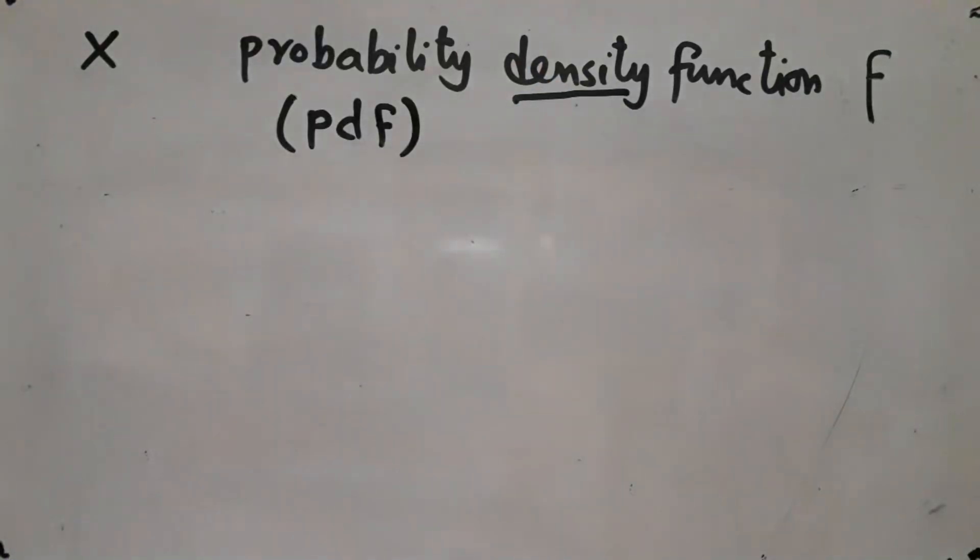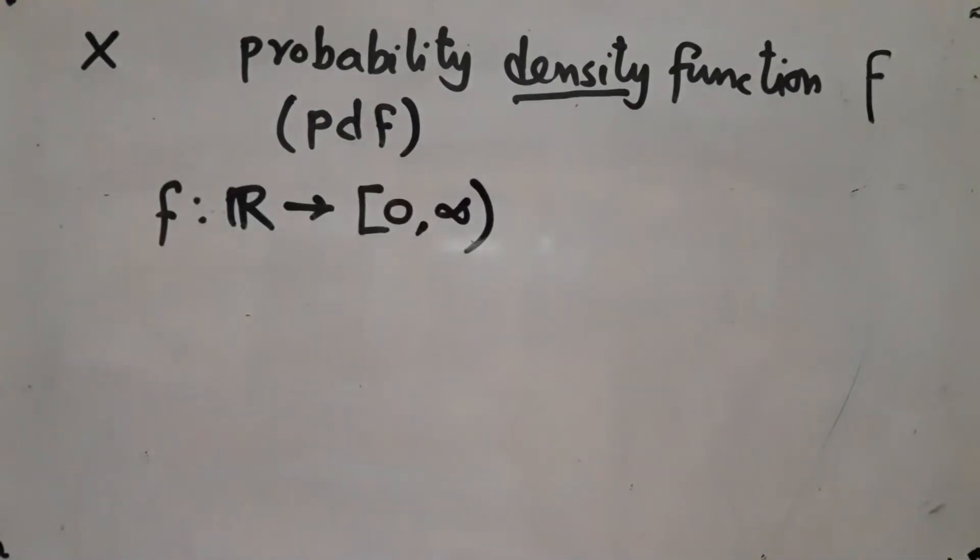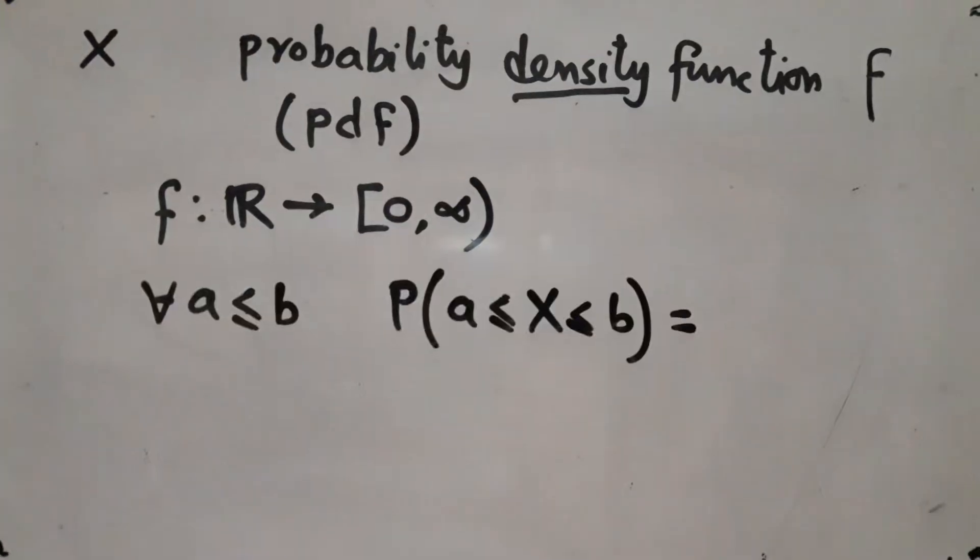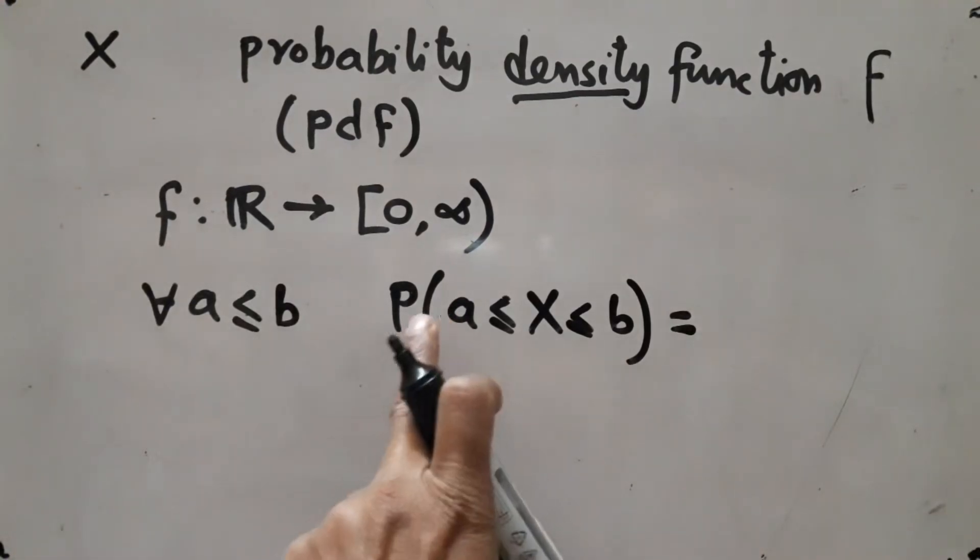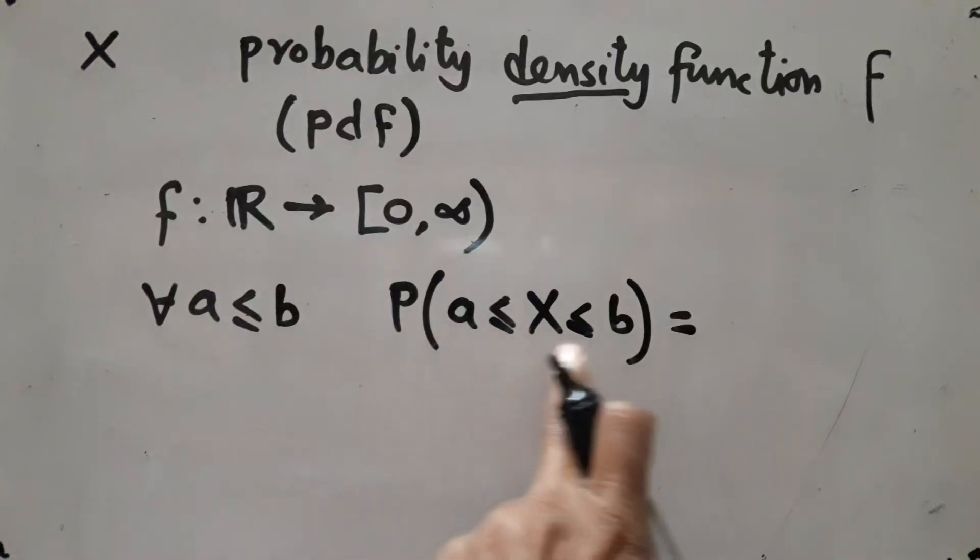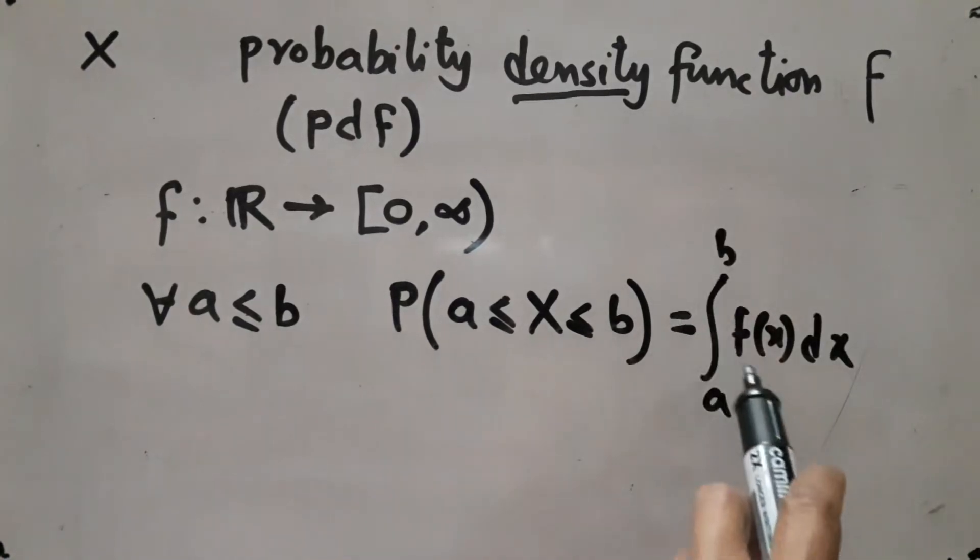A random variable X has density f if f is a function defined over R taking non-negative values such that whenever you take two real numbers a, b with a less than or equal to b, probability that X lies in the closed interval a to b equals the integral from a to b of the function f(x) dx.